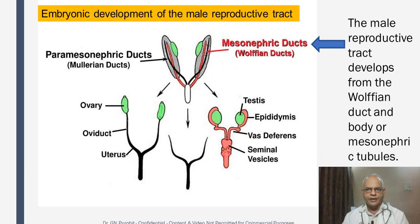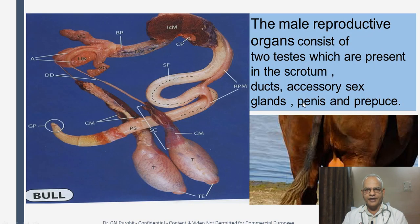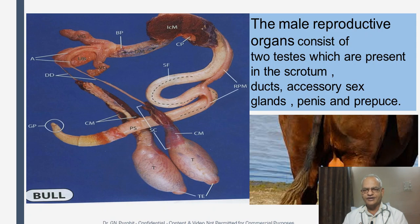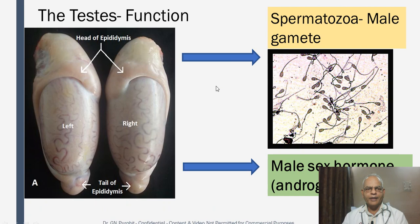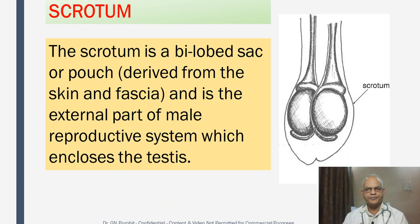The male reproductive tract develops from the Wolffian duct and body, or the mesonephric tubules, during fetal life. The male reproductive organs consist of two testes present in the scrotum, the ducts that carry the sperm from the testes, the accessory sex glands which contribute fluid secretions, and the copulatory organ — the penis and prepuce. The testes are two in number, left and right, and their functions are producing the male gamete or spermatozoa, and producing the male sex hormones, the androgens.